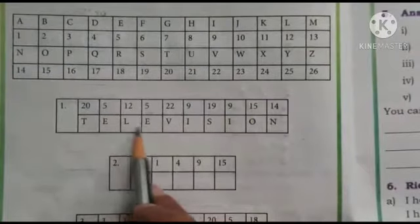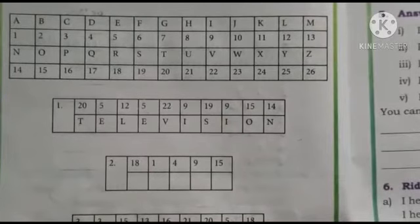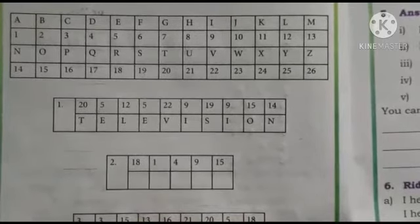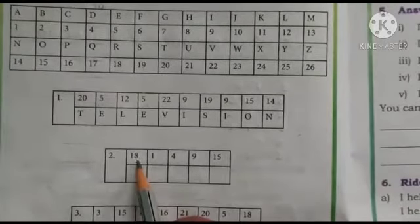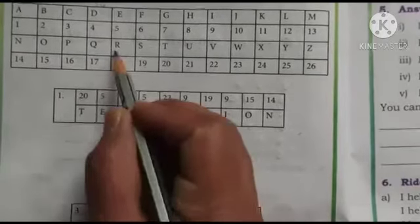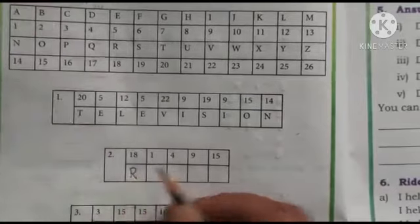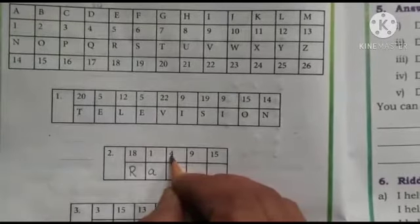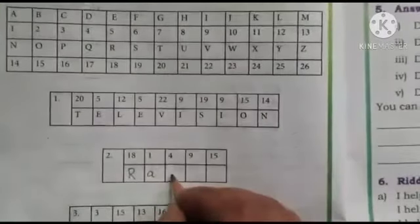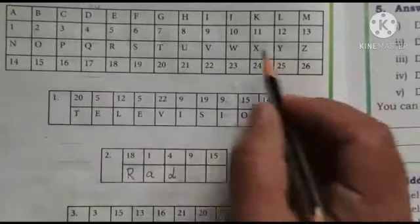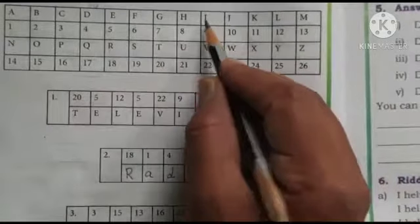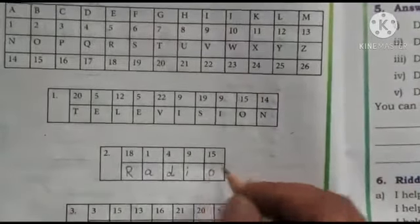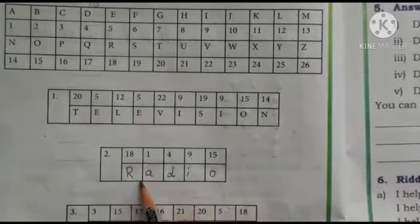Look at the numbers and look at the letters also. You must find out the second one. 18 — for number 18, which letter will come? R. For 1 — A. For 4 — D. For 9 — I. For 15 — O. Which word did it become? Radio.